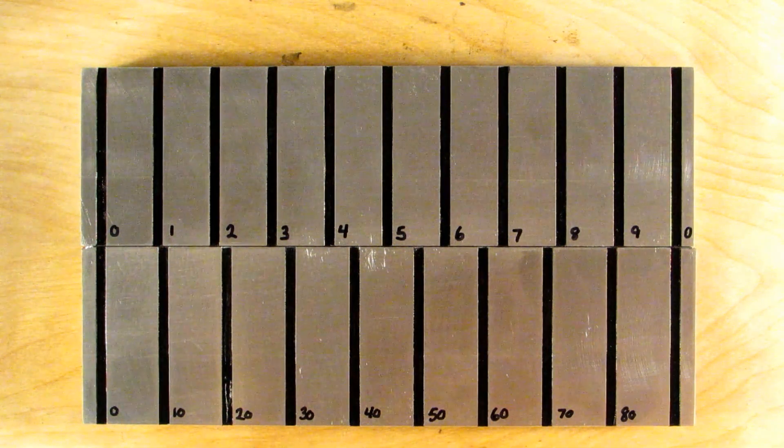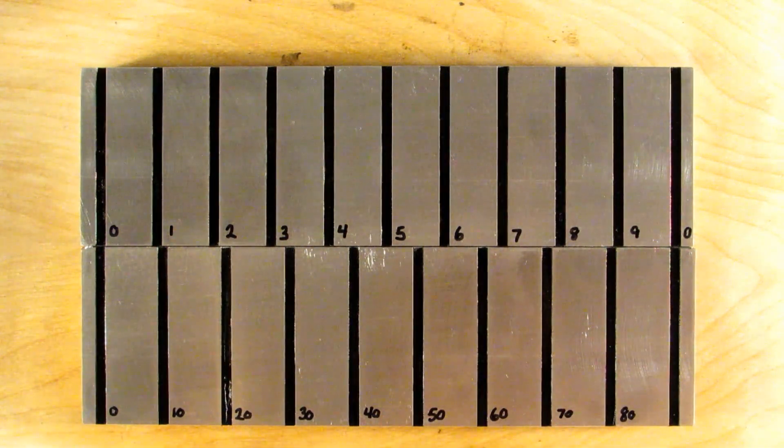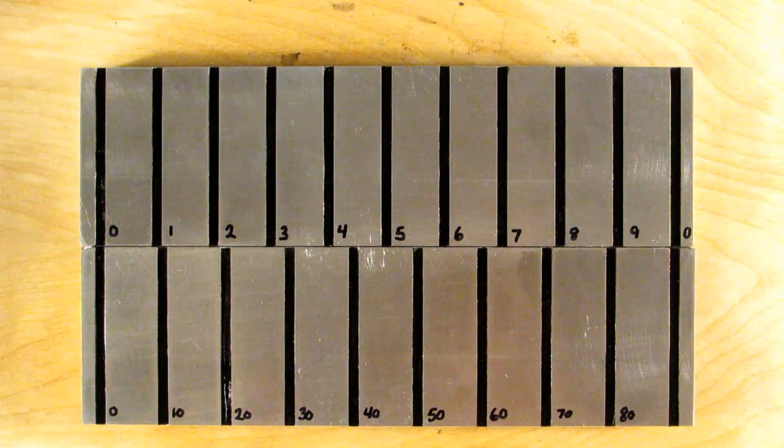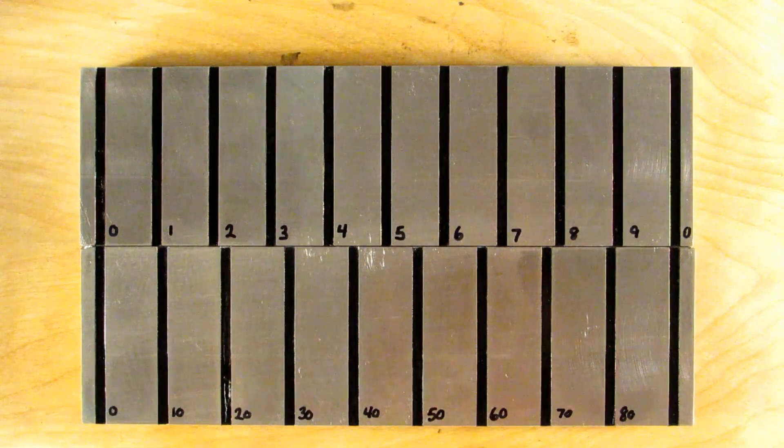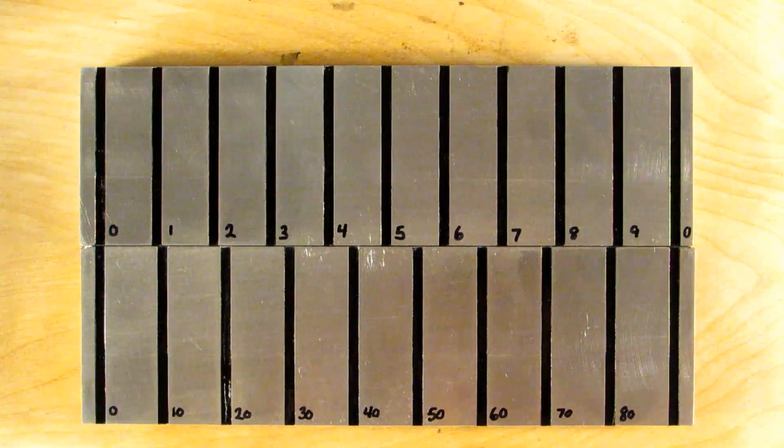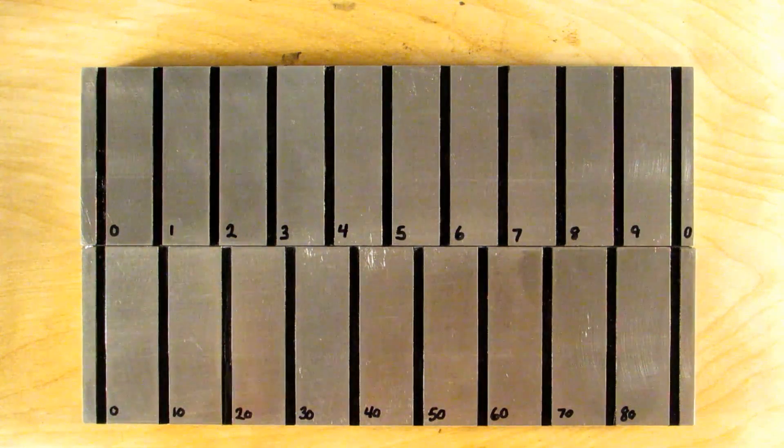Hi everyone. Today I'd like to talk to you about how a vernier scale works. Now vernier scales are used all over the place. They're used on your micrometers to get down to one ten thousandth of an inch. They're used on vernier calipers and they're used on height gauges a lot.